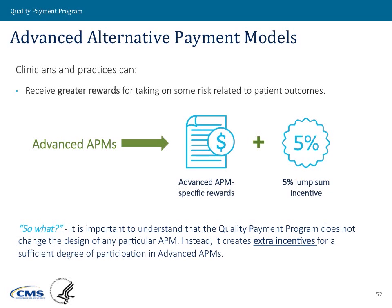It's important to note that what the Quality Payment Program does is add these extra incentives — that 5% lump sum incentive. It does not change the actual terms of the advanced APM itself. All of the terms and conditions that are inherent to the APM remain the same. The Quality Payment Program does not change any of those elements for how the new payment arrangements change the way that Medicare pays for care. Rather, it rewards adoption of that new payment arrangement.